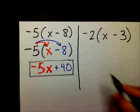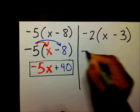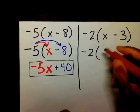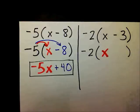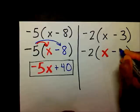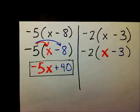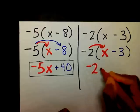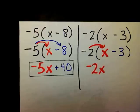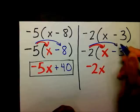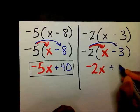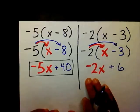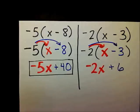Welcome back. We have negative 2 times x minus 3. I'm going to multiply negative 2 times x and get negative 2x. Then I'm going to multiply negative 2 times negative 3, which is positive 6. You should have ended up with negative 2x plus 6.